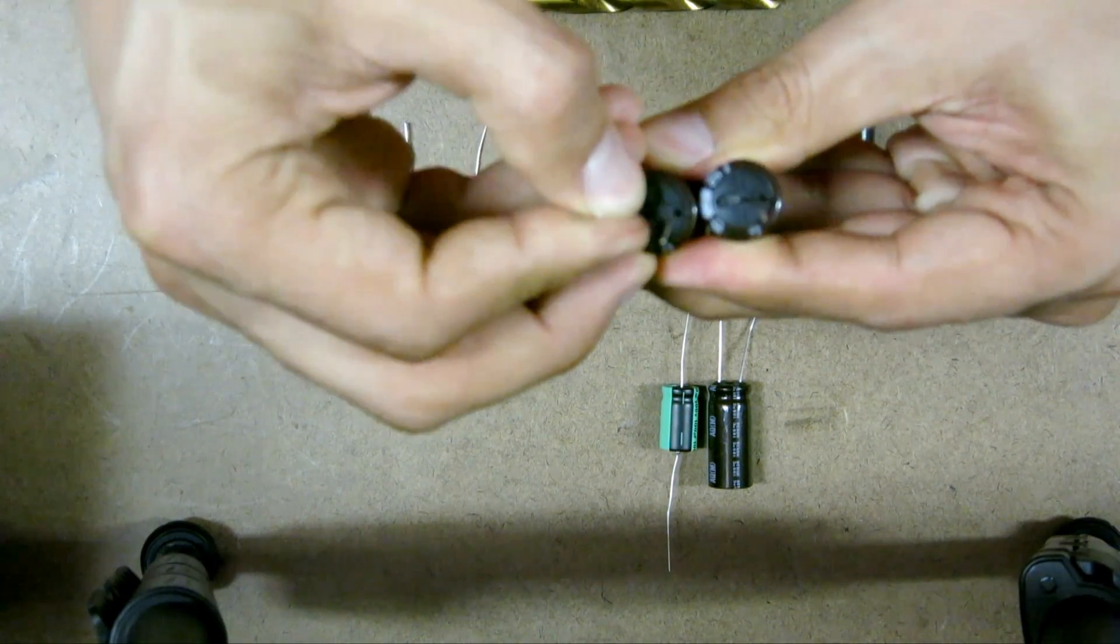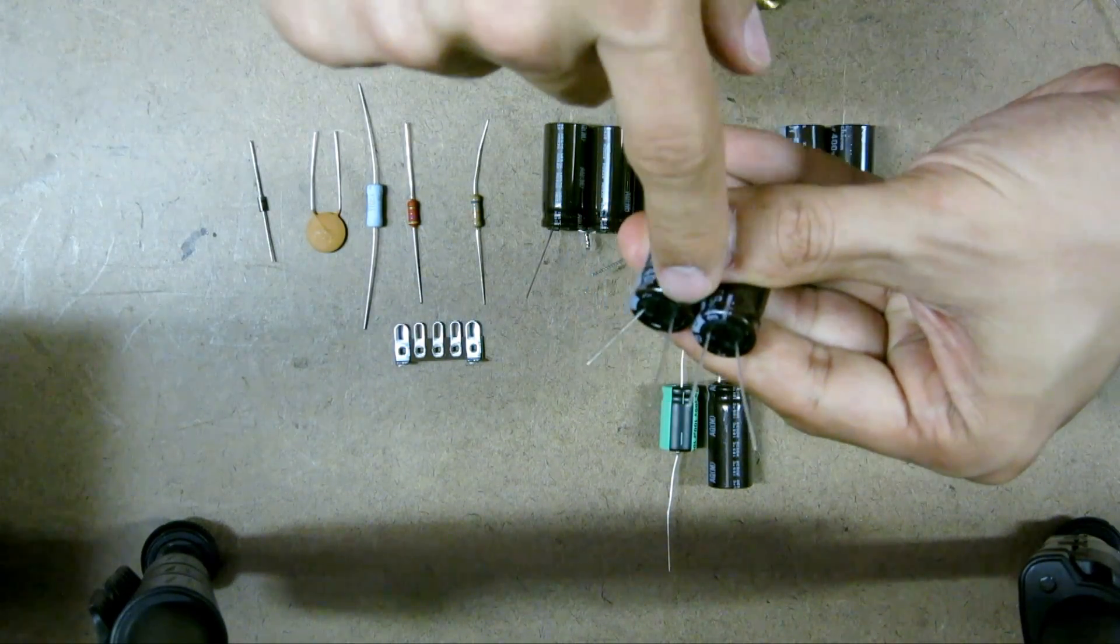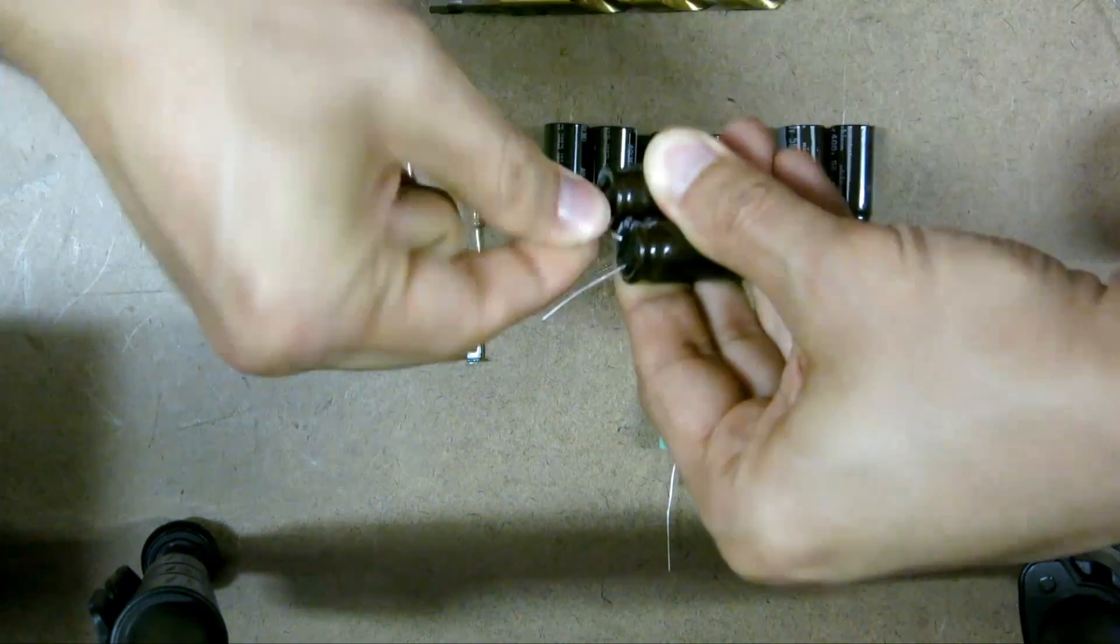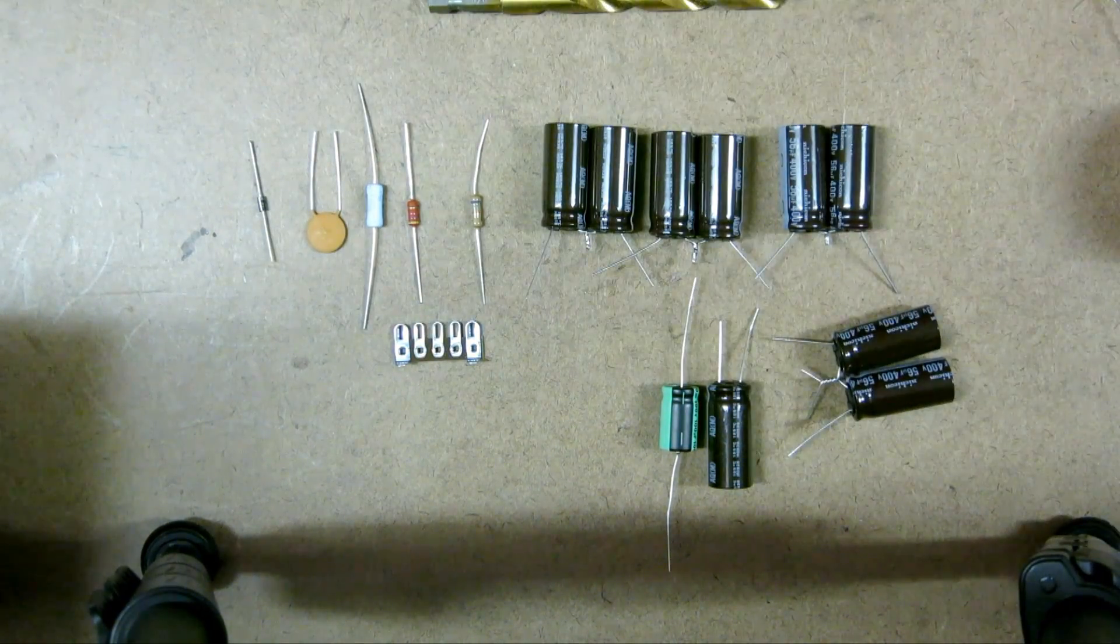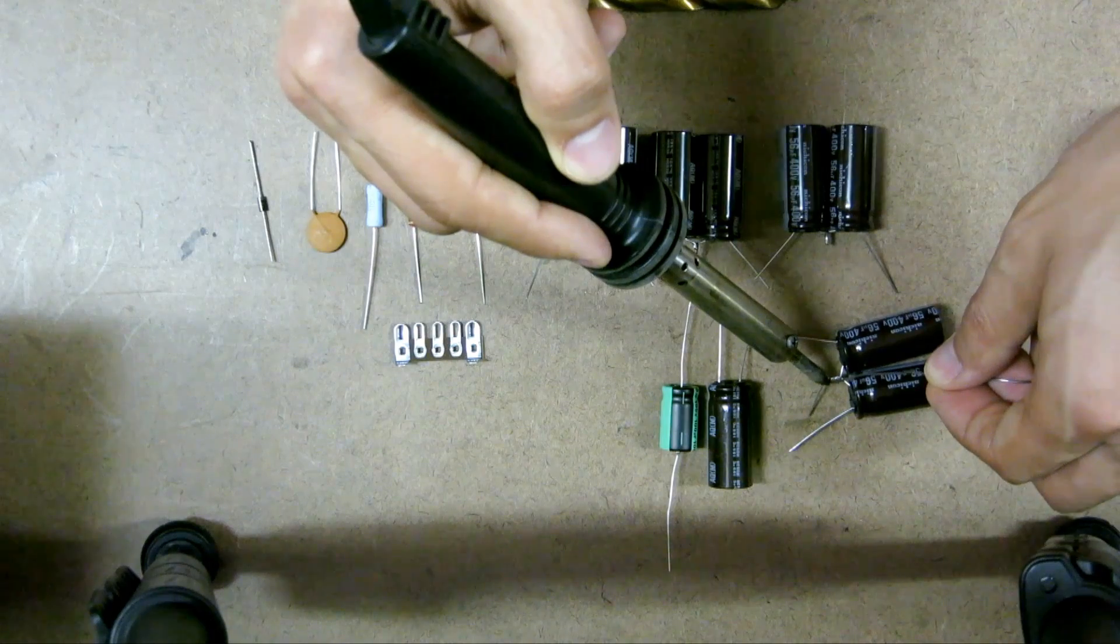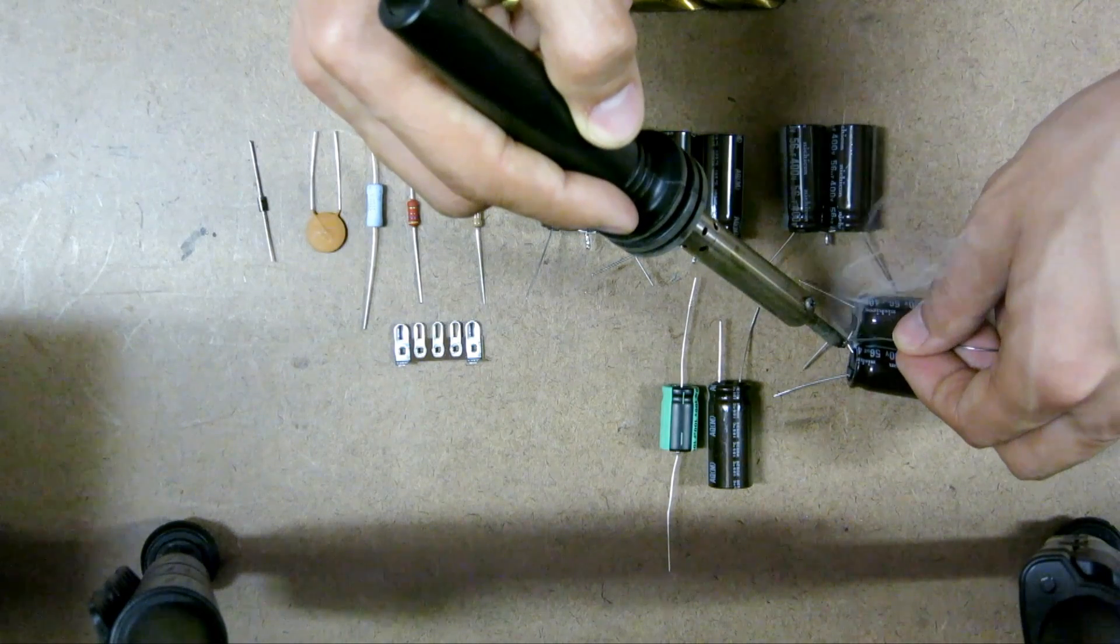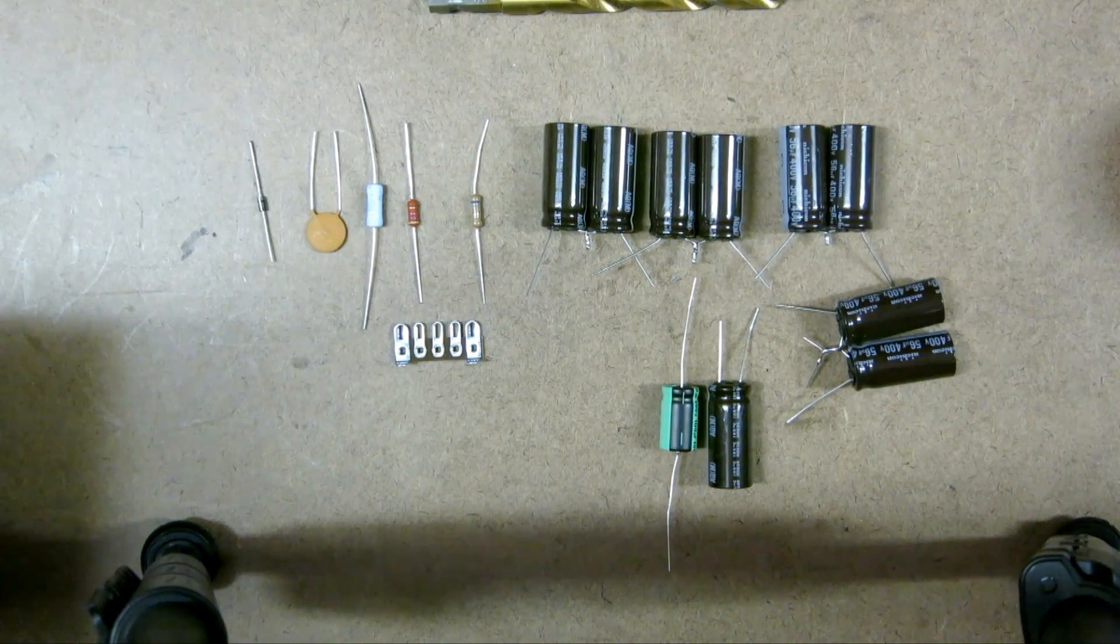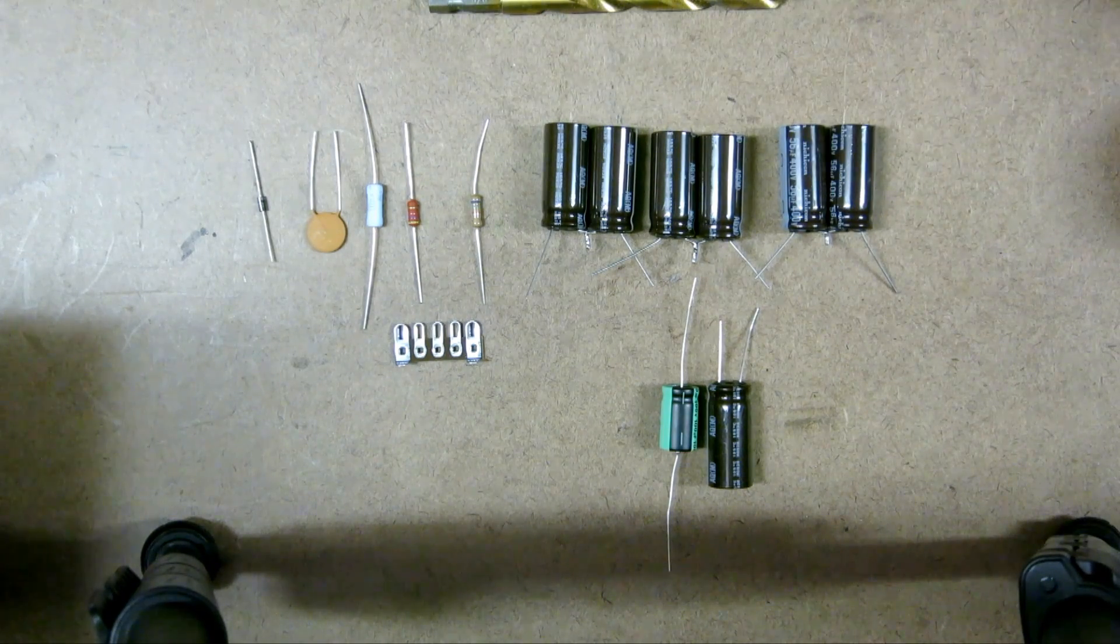And the way how I do it is that I just combine the negative to the positive and I just twist it together. And then after that I just solder it. There you go. And then just cut away the excess.